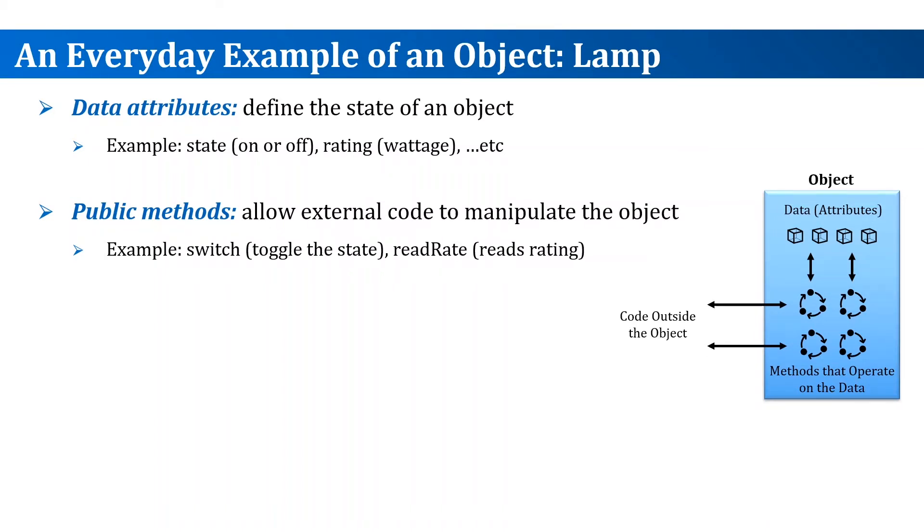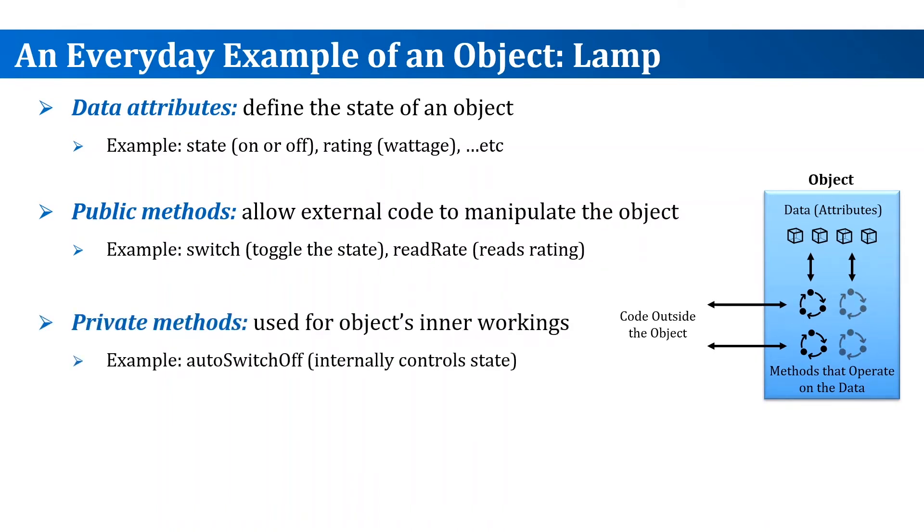Private methods are methods that are used internally by the object. In our case, it could be an internal method that will control auto switch off for the lamp if no activity is detected around it to save power. Objects can survive without private methods. Since we need to think in terms of objects, this means that when we think of a problem that we want to solve, we try to decompose the problem into objects.